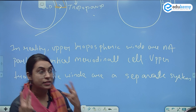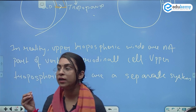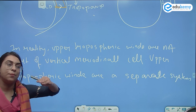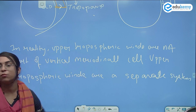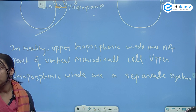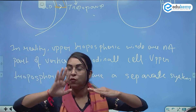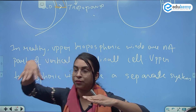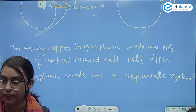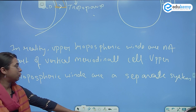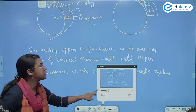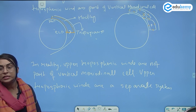What is that system? Wind moves from high pressure to low pressure — and the upper tropospheric winds will also move from high pressure to low pressure. But the high and low pressure up there are different. What is happening below does not influence what is above, but what is happening above does influence below. The first key point is that the upper tropospheric winds are not part of the vertical meridional cell — they have a separate system.